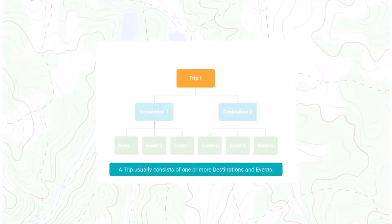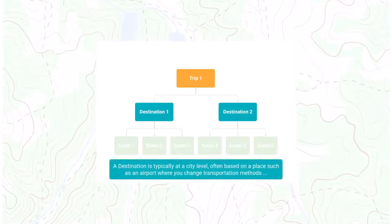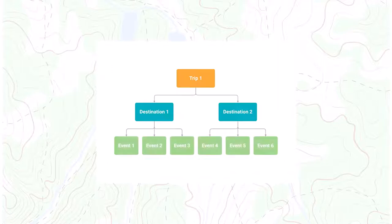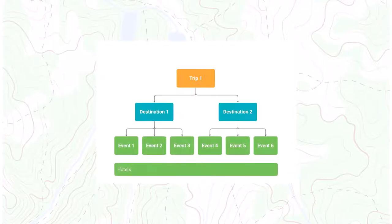A trip usually consists of one or more destinations and events. A destination is typically at a city level, often based on a place such as an airport where you change transportation methods, or a place you stop at en route to another destination, or where your nightly lodging is. Events are typically places like hotels, restaurants, parks, beaches, trailheads, and venues, to name a few.